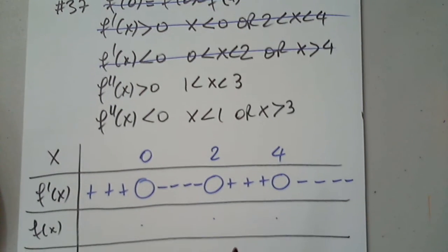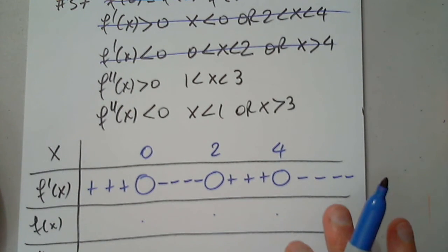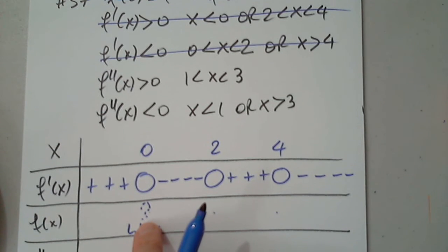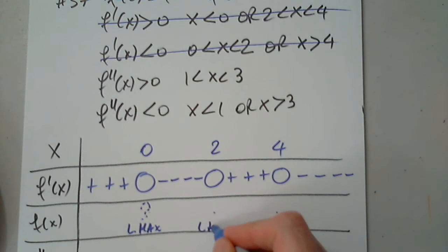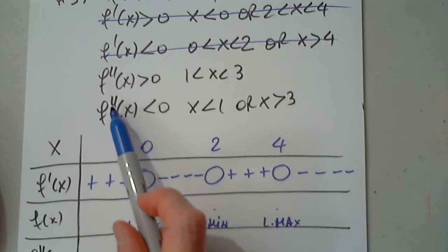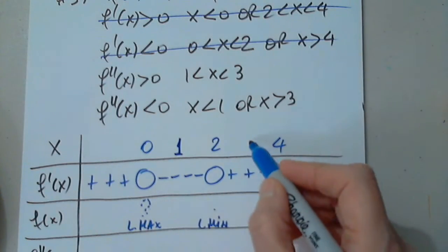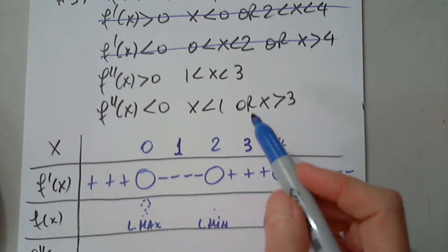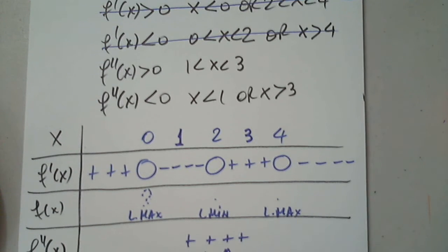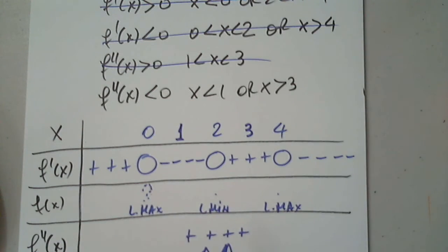I know for sure that this is a local max. I know that this is a local min. And I know that this is a local max. Now moving on to the second derivative — I have to insert 1 and 3 in the correct spot. It says that it's positive between 1 and 3.